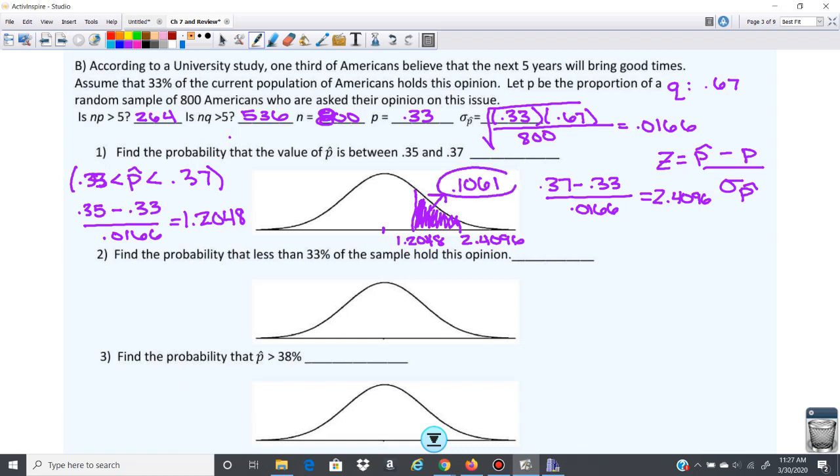And that is your solution for that one. And that is the probability, so about a 10% to 11% probability, that between 35% and 37% of the population believes the next five years will bring good times.